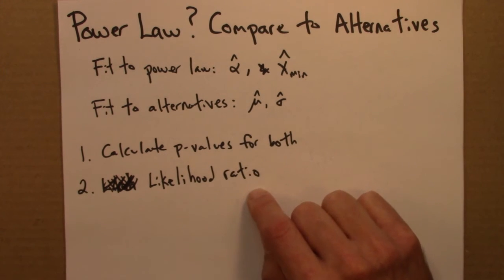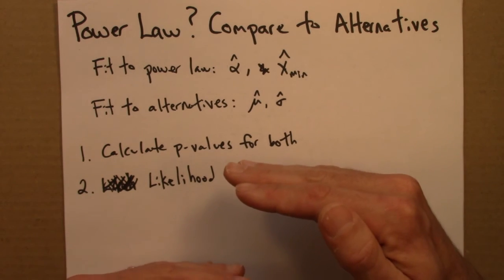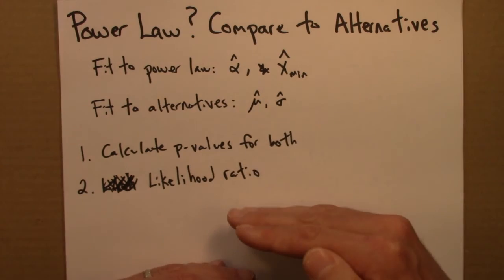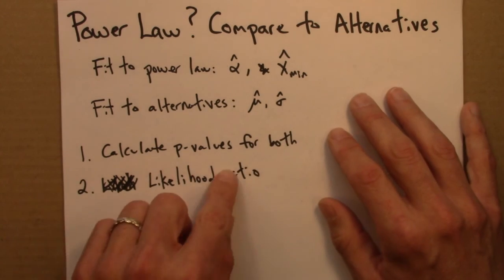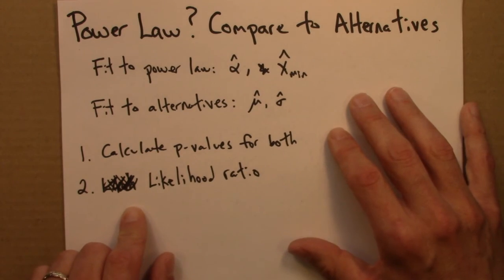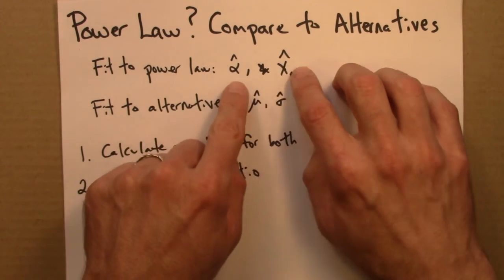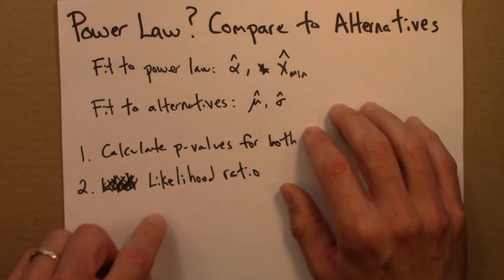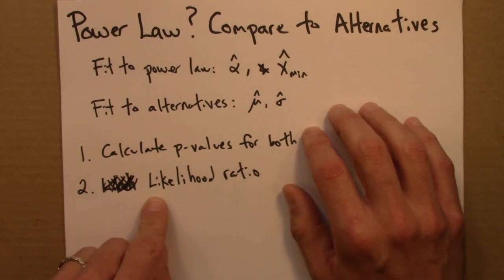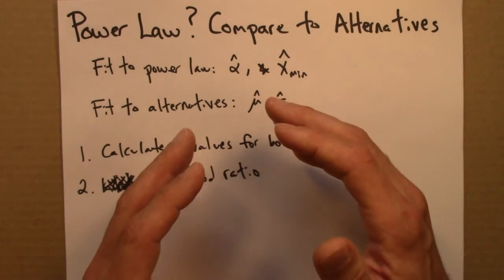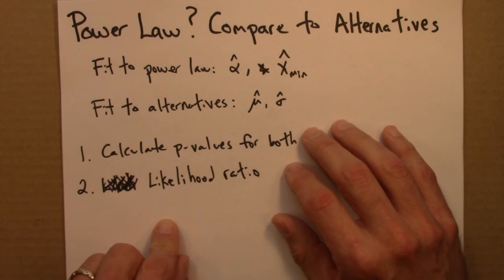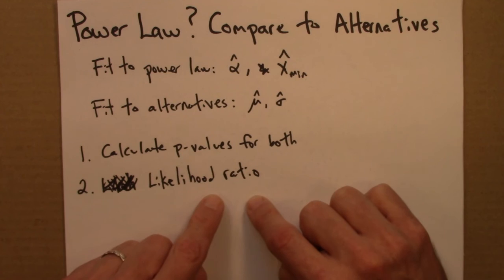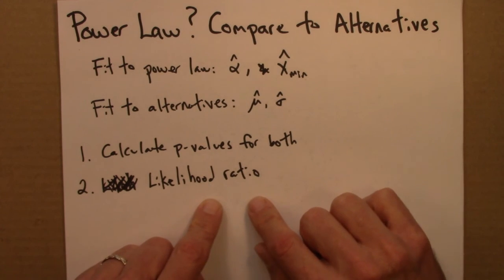And the approach there, again, is to bootstrap. So basically create synthetic data from both of these, use those to repeatedly calculate likelihood ratios, and then see what a range of likelihood ratios you'd expect. And then that would let you figure out if the likelihood ratio that you observed was significantly different than 1. And that would tell you if one of these models, one of these distributions was strongly favored over the other.